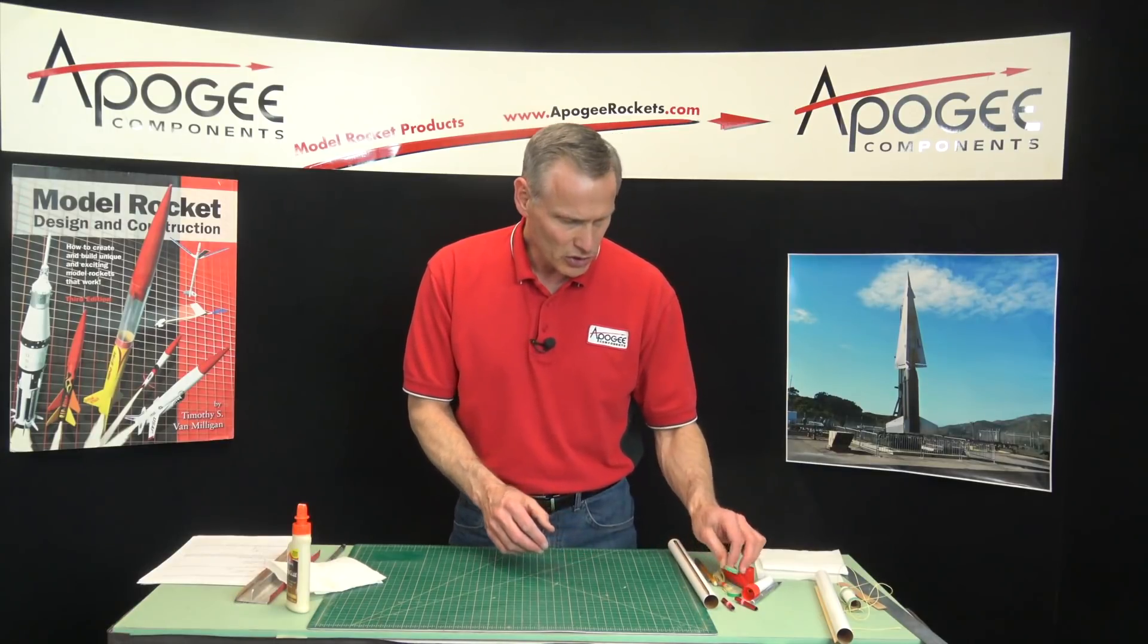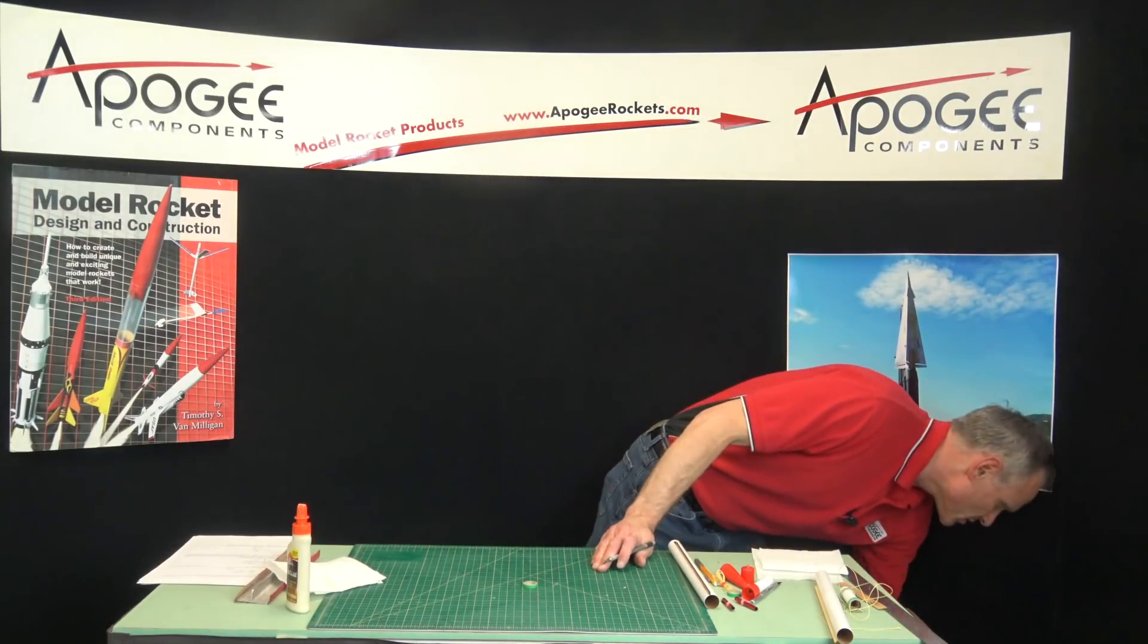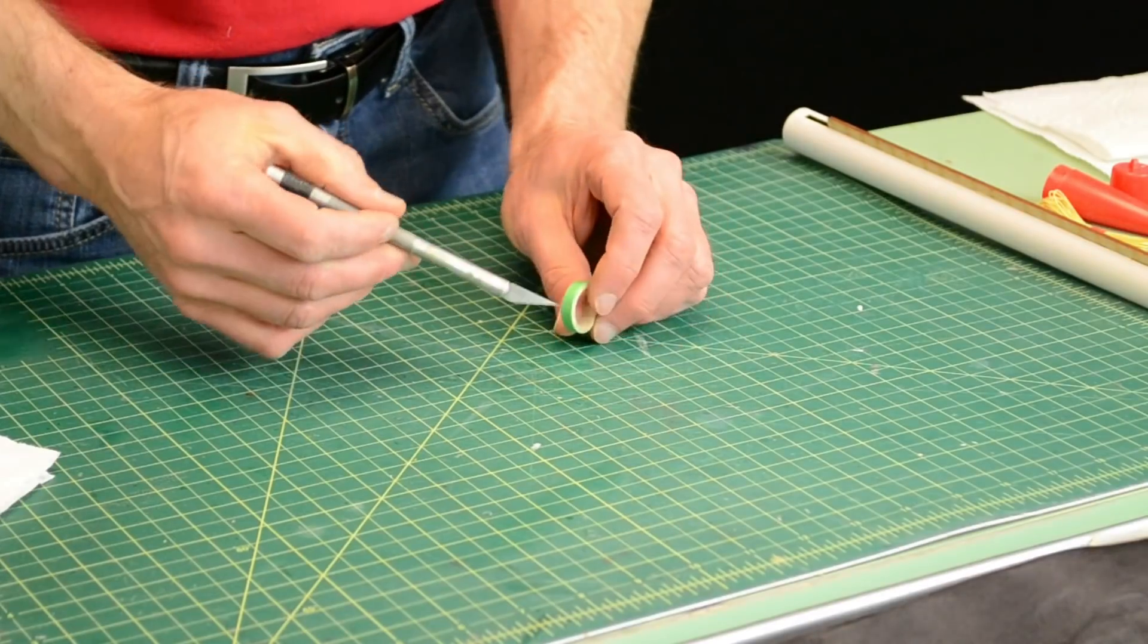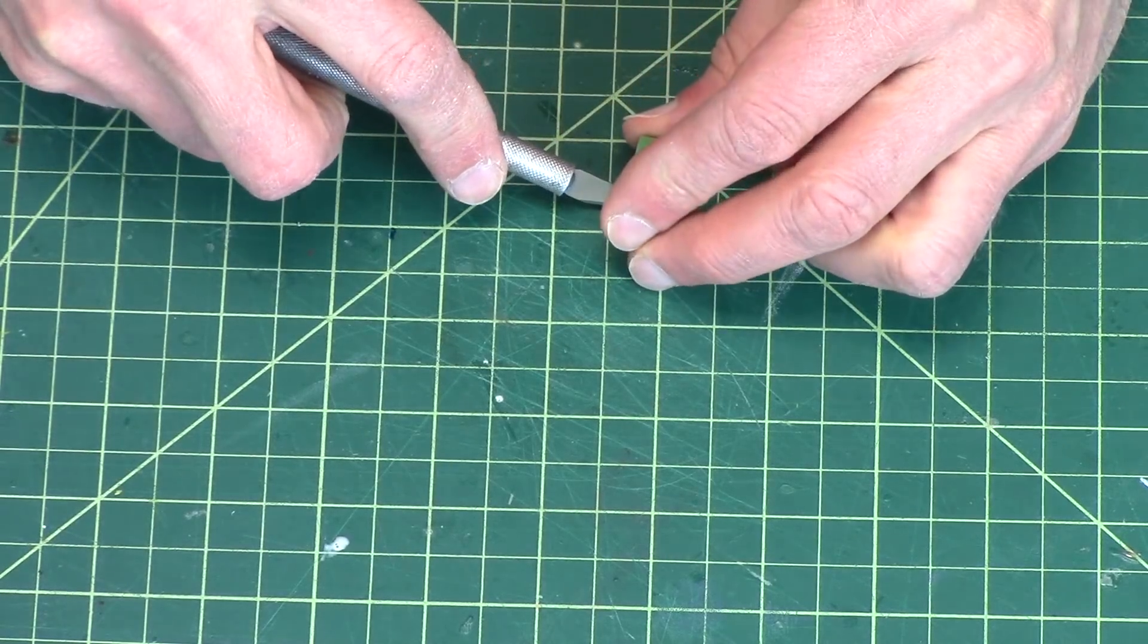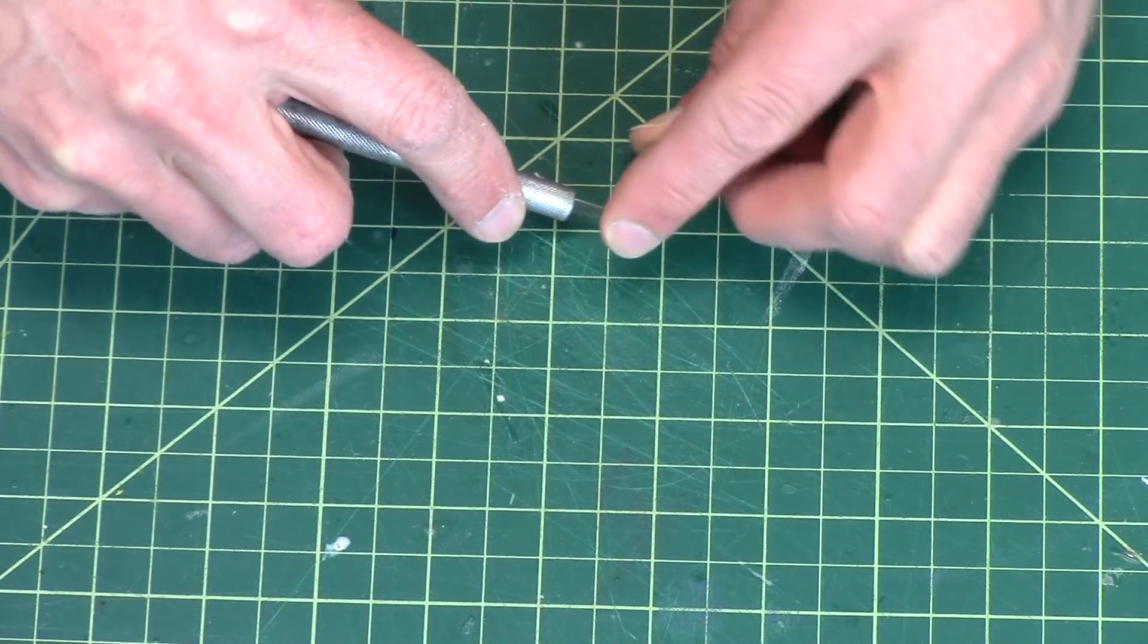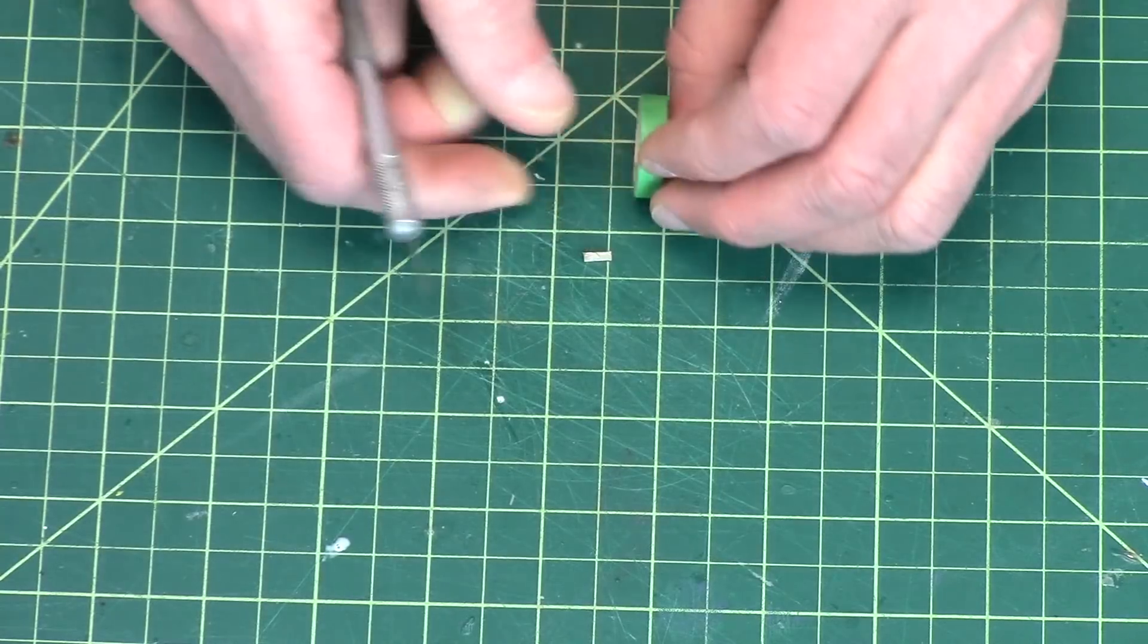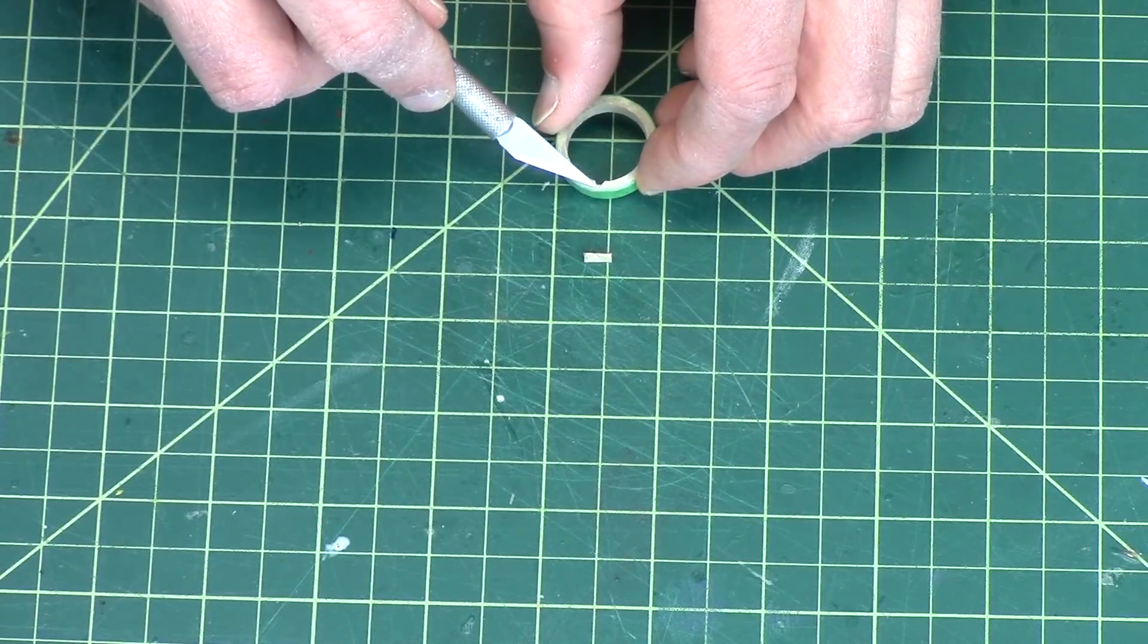So while that's drying, I'm going to take the green centering ring here. We're going to take this green centering ring and we're going to cut a notch in it. There's two of these because there's two pods, so you'll do each of these steps twice. We're cutting a notch in it, going back and forth. This is kind of like what we did with the main body tube. You get a little notch right here, and that is for the shock cord.